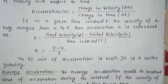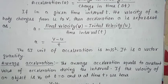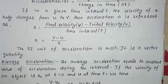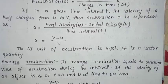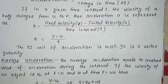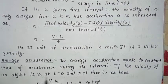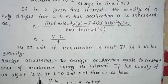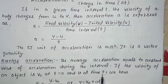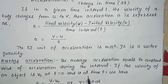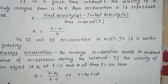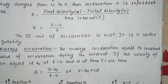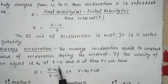Average acceleration क्या होता है — the average acceleration equals a constant value of acceleration during the time interval. जब value आपको constant हो रही है, तहाँ हम average acceleration की बात करते हैं। If the velocity of an object is V₀ at t = 0 (initial velocity), and V at time t, then we get: Ā = (V − V₀) / (t − 0).